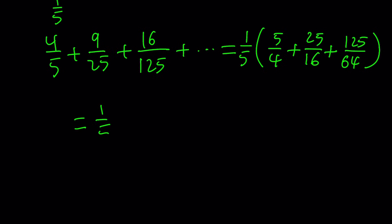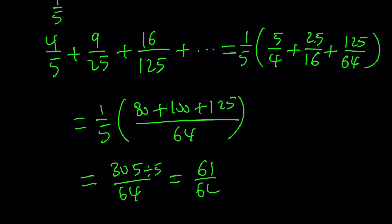Make a common denominator and simplify this. 5 times 16, that's 80. And then 25 times 4 is 100. And 125 times 1 is the same. Divide by 64. We're going to be able to divide everything by 5, but this gives us 305. And then over 64 divided by 5. That should be 61 over 64. If I did not make any mistakes. Let's go ahead and check the result from Wolfram Alpha. And we're going to see if I made any mistakes.